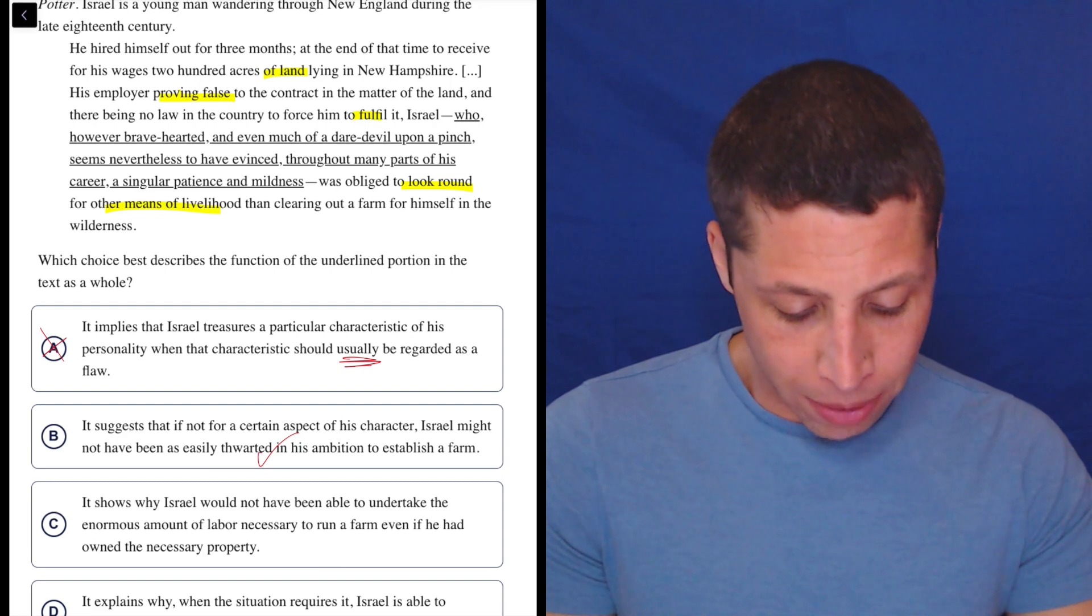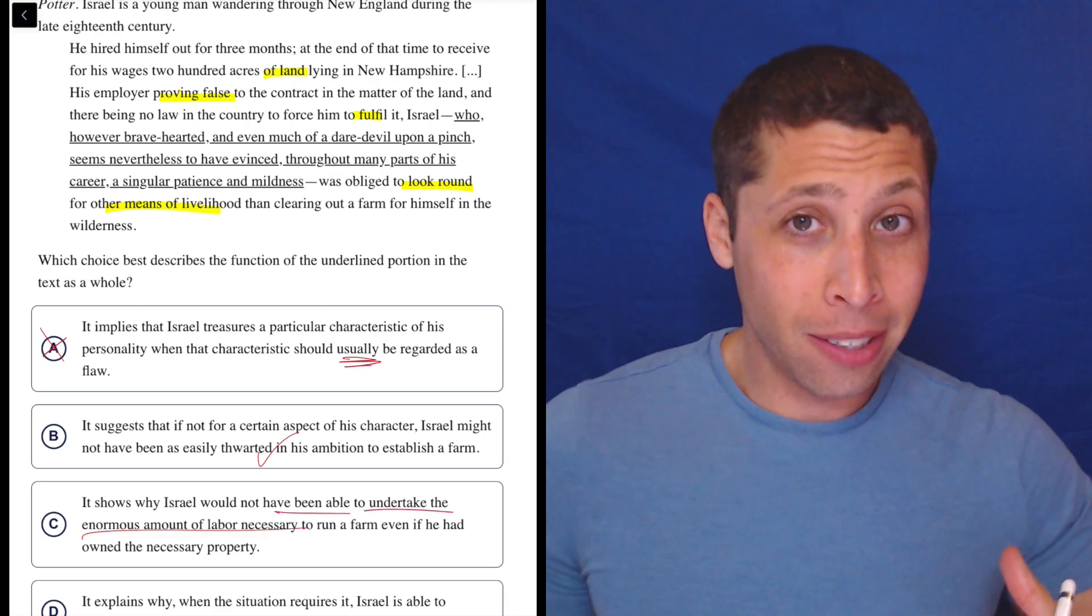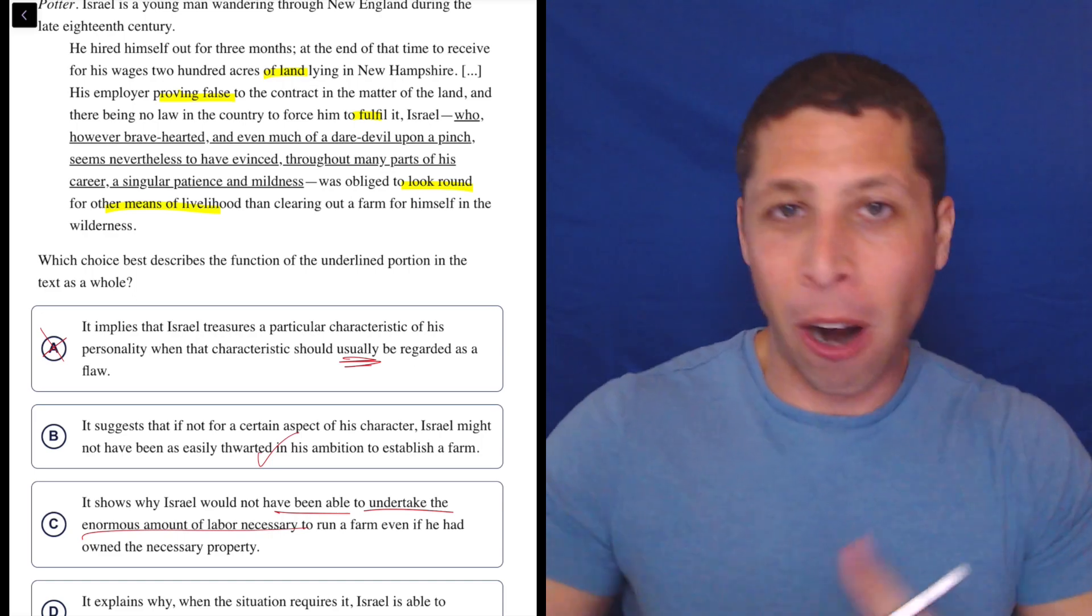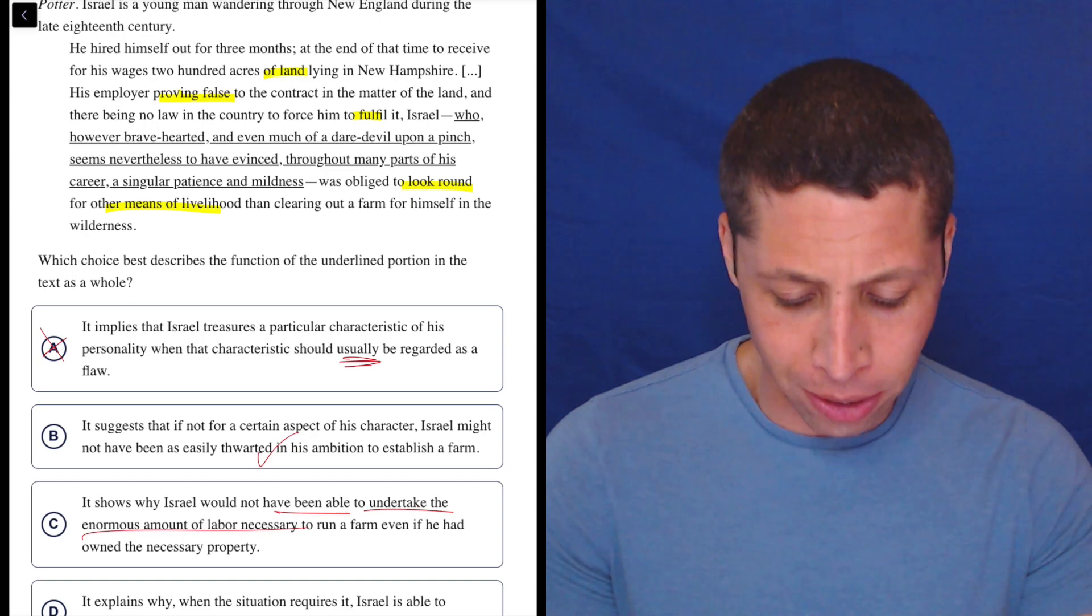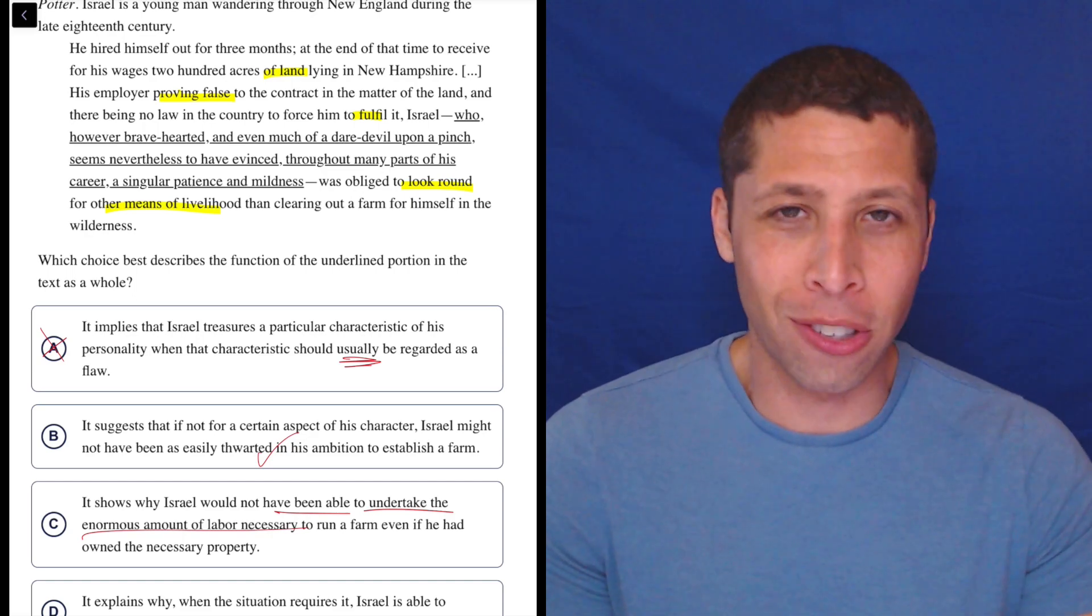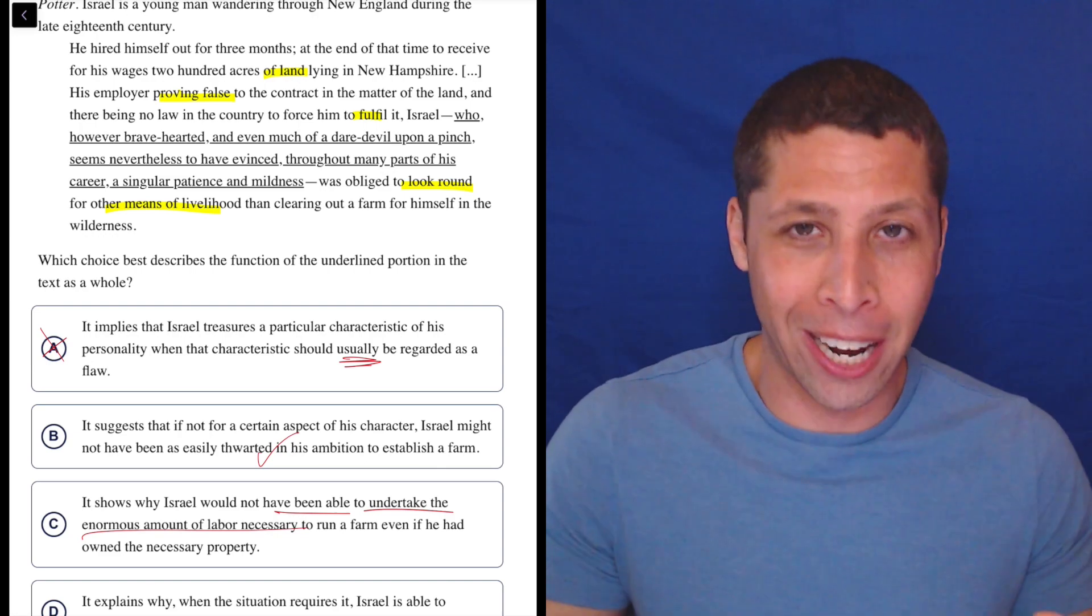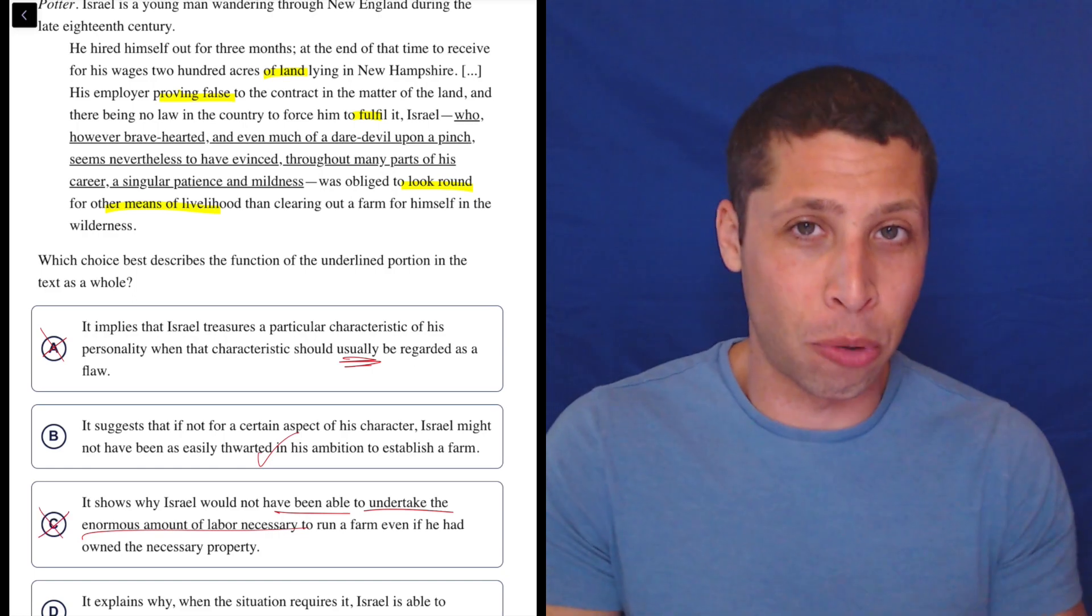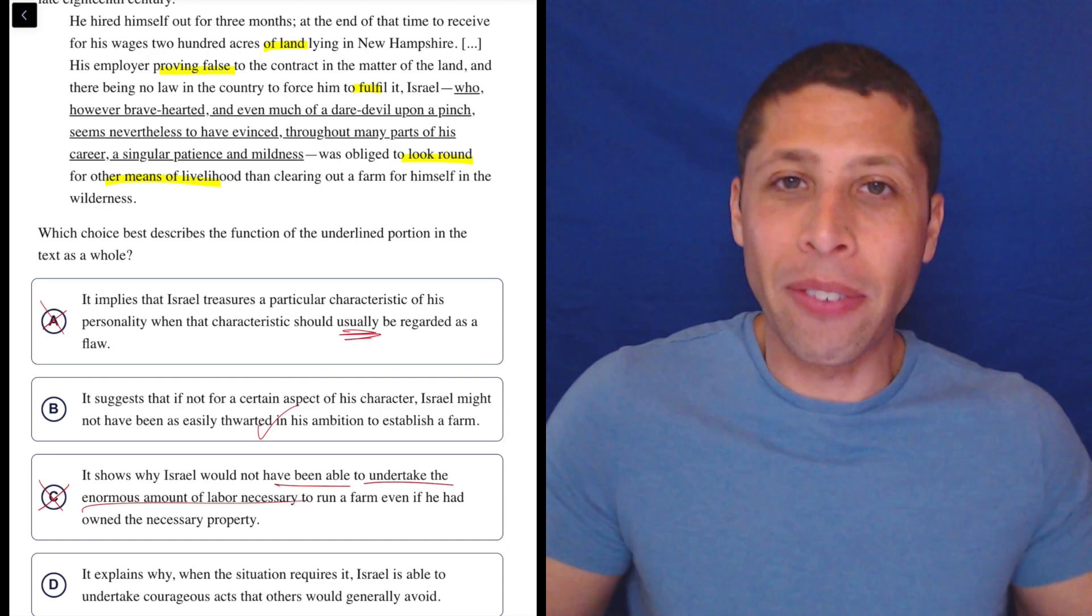C. It shows why Israel would not have been able to undertake the enormous amount of labor necessary to run a farm, even if he had owned the necessary property. Is that what's happening here? Are they saying that he was incapable of actually running the farm? No, he did not get a farm. So we will never know whether or not he was able to do a good job or not. So just because you are patient and mild and bravehearted does not mean you can't run a farm. Those are qualities that have nothing to do with each other as far as I know. I'm not a farmer, but that's the point, I guess, right? I shouldn't have to be a farmer to know whether that's a good farming quality or not. So this again is bringing in some sort of outside information, but more importantly, he would have failed. He just never got the farm. He never got the chance.